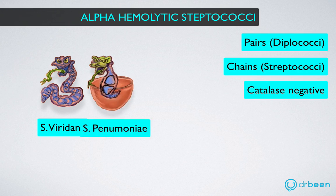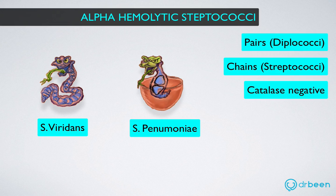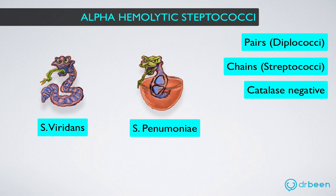Streptococcus pneumoniae lives in short chains or pairs. We will treat it as a cute baby snake here, but don't be deceived — it is as destructive as the adult snake. The baby snake is made up of spheres that look like the tip of a lance, and there are only two living together. Due to its tendency to live in pairs, it is called diplococcus, where 'di' means two. This pathogen is also called pneumococcus, and its purple color is due to the gram positive stain.